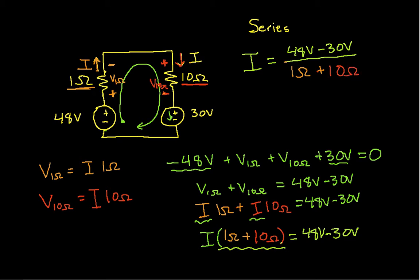And so now I can actually work this out. Now, if I do the computations, I have 48 minus 30, which would be 18 divided by 1 plus 10, which would be 11. That gives me that I is equal to 1.636 amps. Okay, so there's my answer.